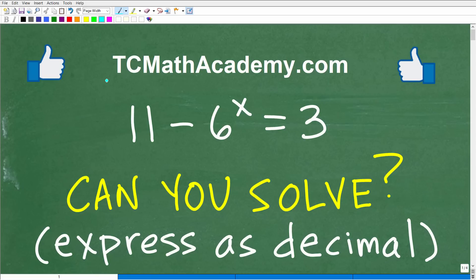Hello, this is John from TC Math Academy, and in this video we're going to solve this equation right here. We have 11 minus 6 to the x is equal to 3, and we're looking to solve for x.